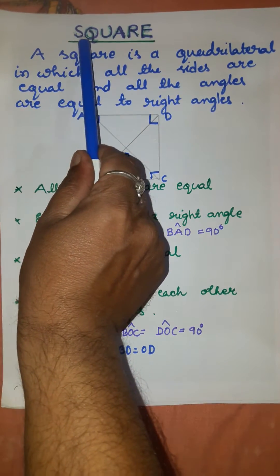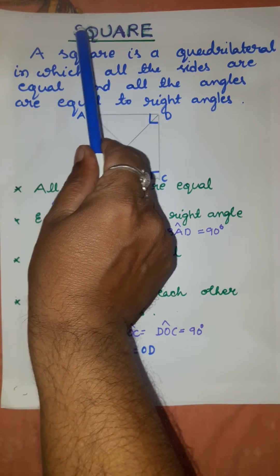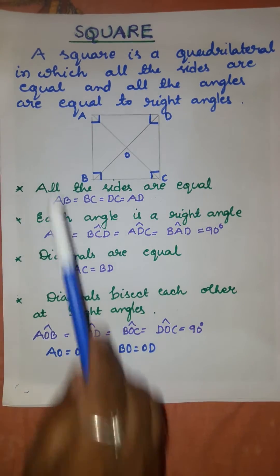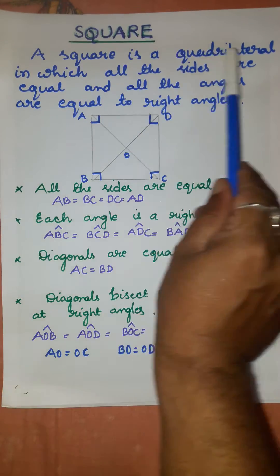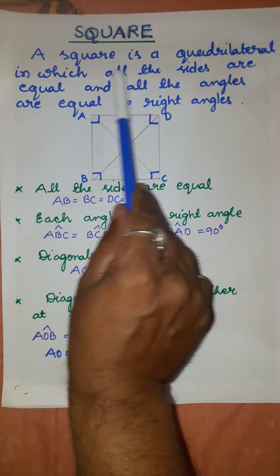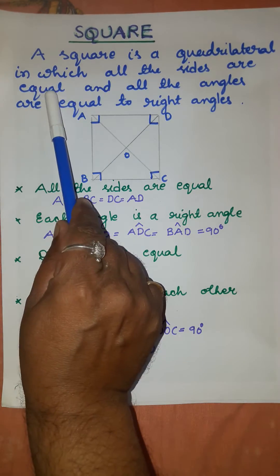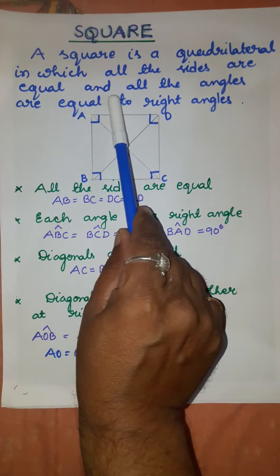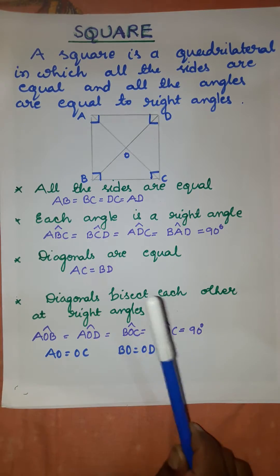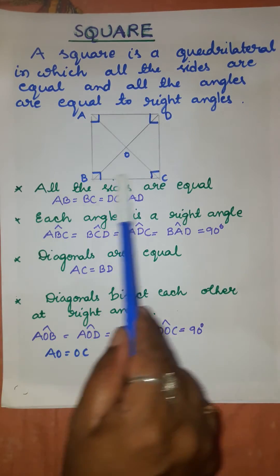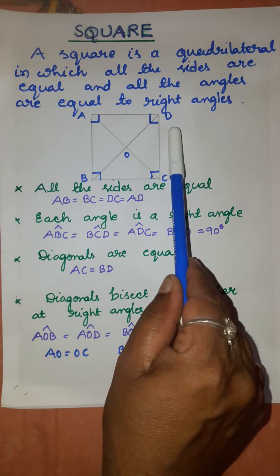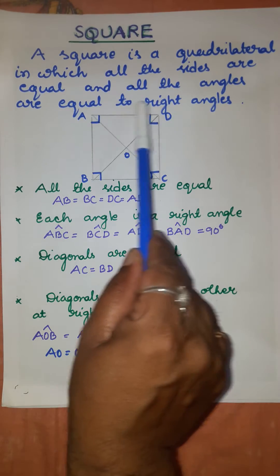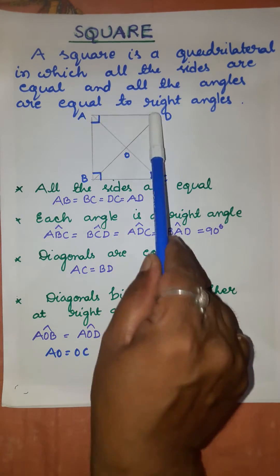Dear children, we shall learn about the geometrical shape square. What is a square? A square is a quadrilateral in which all the sides are equal and all the angles are equal to right angles.